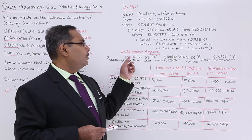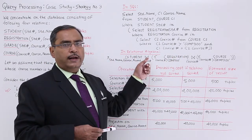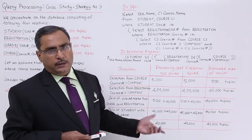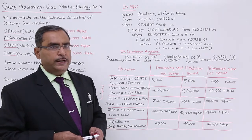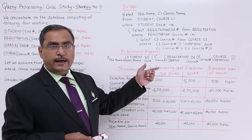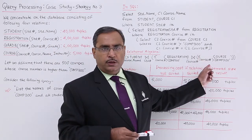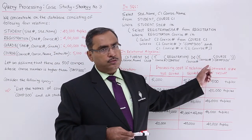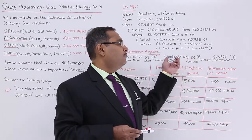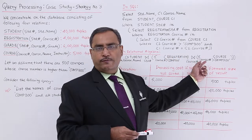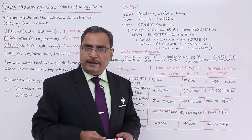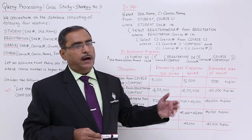After getting the filtered tuples from registration and from course, we go for the natural join on course number. That is the initial operation. Then on that result, we go for natural join with the student on the attribute student number. And obviously in the output we will be requiring student name and the course name. So at first we do the selection operation to extract and filter only those tuples contributing towards the output from both course and registration, then we go for the natural join, then we join with student to fetch the student name.